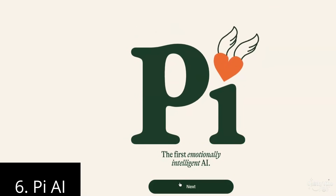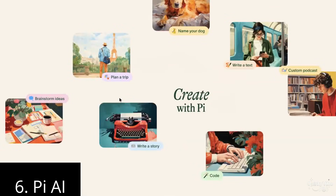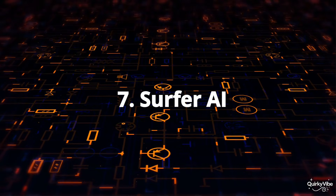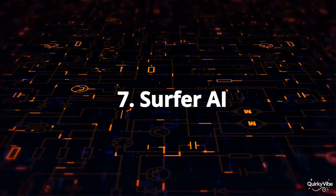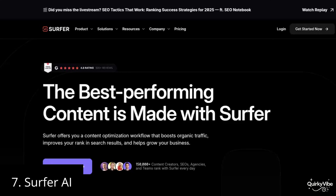Pi is a personal AI assistant designed for empathetic and conversational interactions. Its primary use case is providing personalized support and guidance, such as engaging in discussions for mental wellness, assisting with daily planning, trip planning, and offering productivity hacks, among other things.